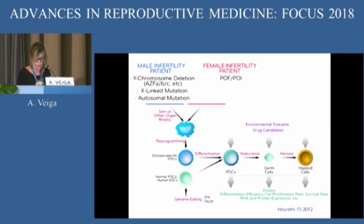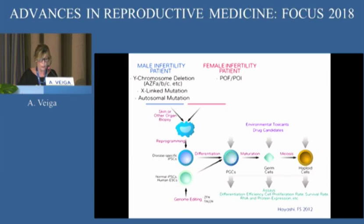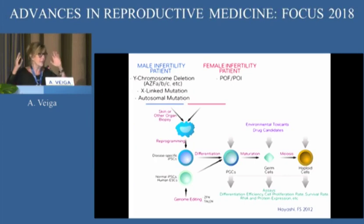The schematic representation is exactly the same: from skin or other organ biopsy, IPS cells are produced through reprogramming. These cells are differentiated, matured, and taken through meiosis in the case of infertility — comparing with the normal situation to find different problems. On top of that, genome editing has been optimized with the technique of CRISPR-Cas, allowing us to model the disease of infertility and other problems.